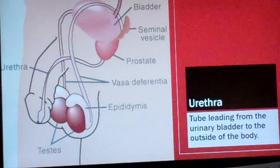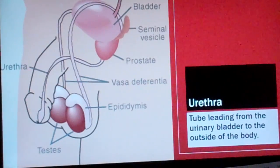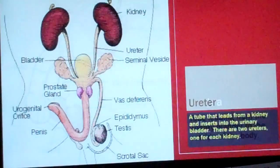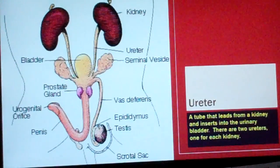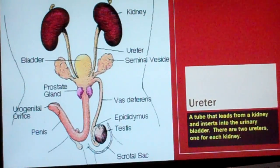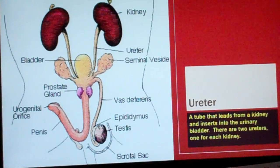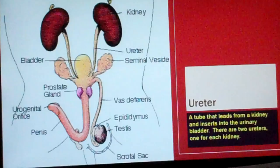Urethra: a tube leading from the urinary bladder to the outside of the body. Ureter: a tube that leads from the kidney and inserts into the urinary bladder. There are two ureters, one for each kidney.